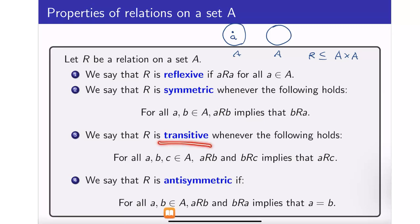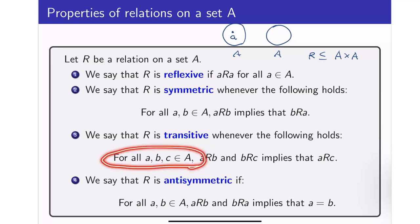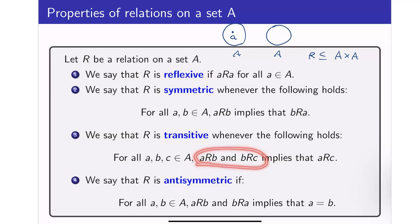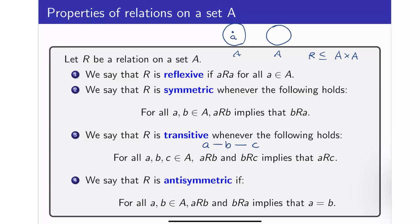What about if R is transitive? It is transitive whenever, if we get three arbitrary elements in A and this condition happens: if A is related to B and B is related to C, then A must be related to C. It's like transitivity of equality — it's like a chain. A is related to B, B is related to C, so therefore A must be related to C.